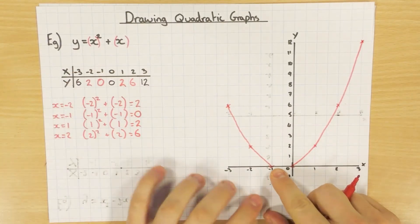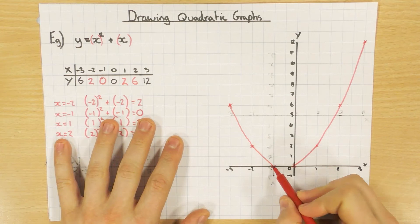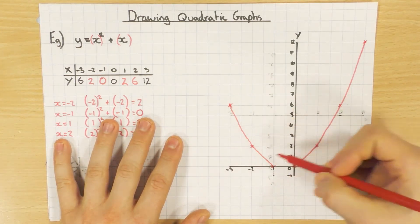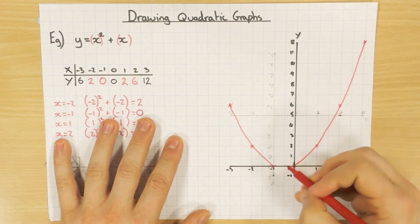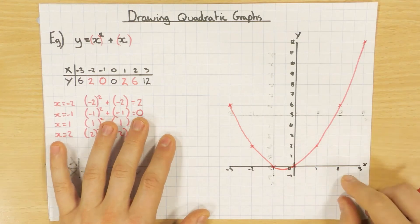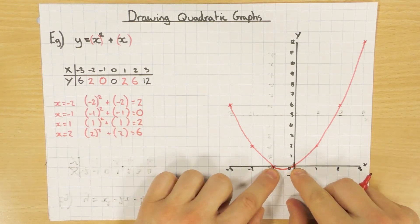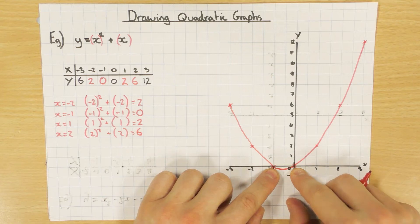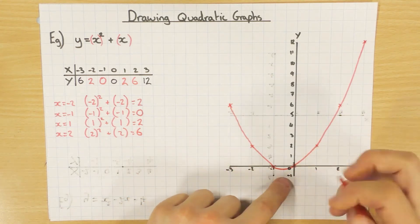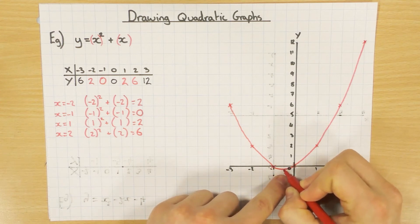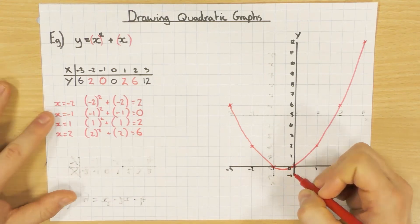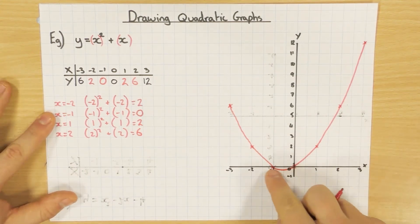I've deliberately left this bit, because what some people do is they join these two bits up with a flat line. No — because it's meant to be a curve. You need to carry on the curve. You can tell that these two won't be the minimum point — because you've got those two pairs symmetric. The actual minimum point is going to be in between these, so it's going to be at minus 0.5 — the minimum point of this particular graph, because it's in between those two points.